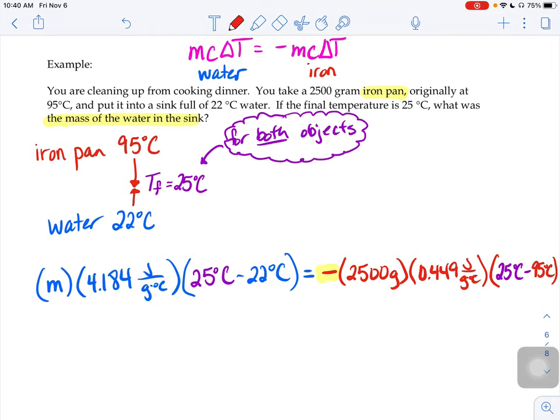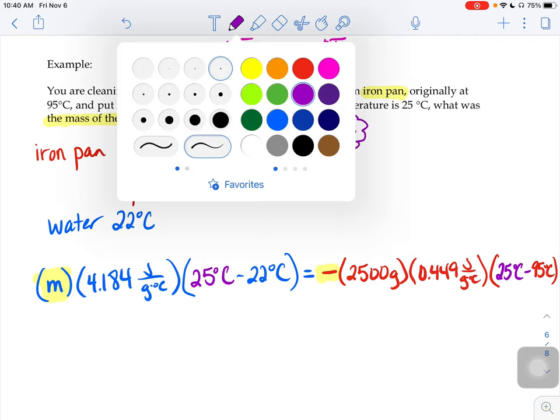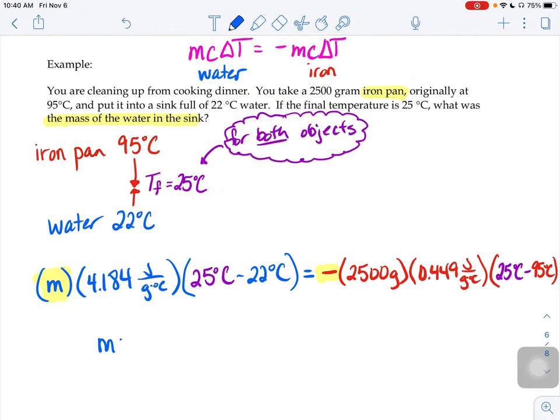Now it's just an algebra problem where we have to solve for that M. We know all the other components of that problem. When you throw that guy in your calculator, the mass of our water, you should get your calculator will tell you 6,259.958. I'm going to round my mass to just two sig figs because my temperatures had two. This mass here had two. So I'm going to take this guy and round it to just two sig figs. So it's roughly 6,300 grams worth of water in that sink.